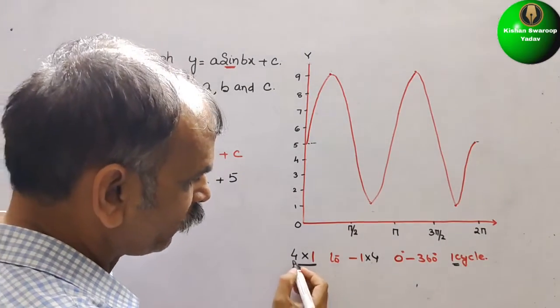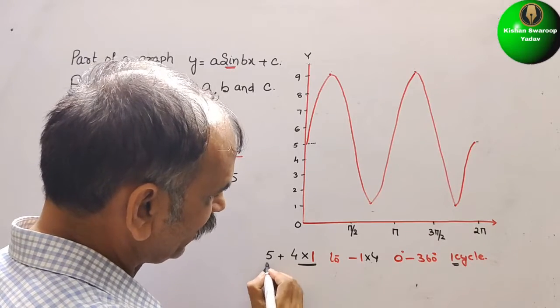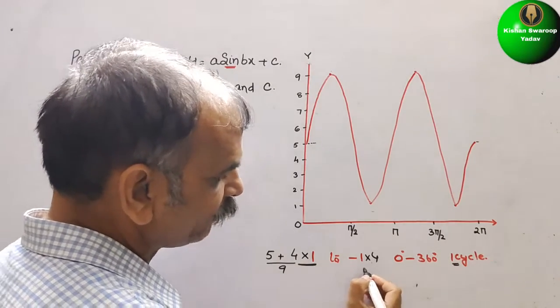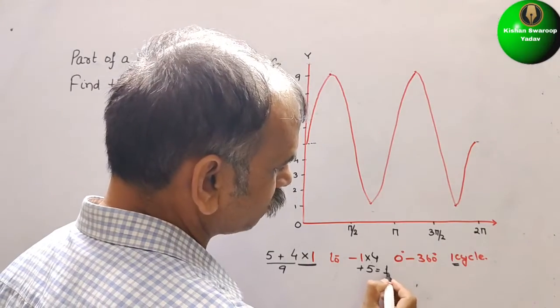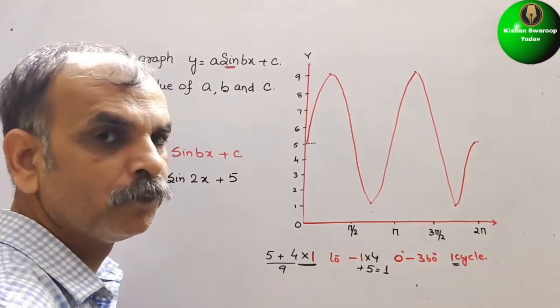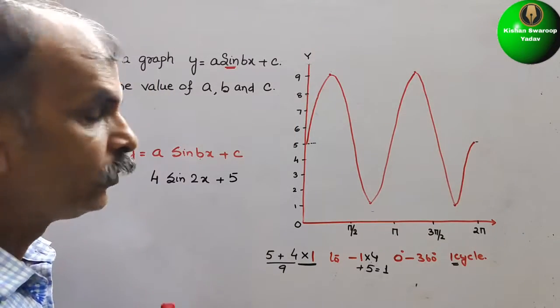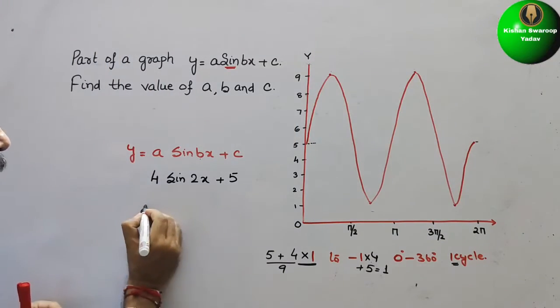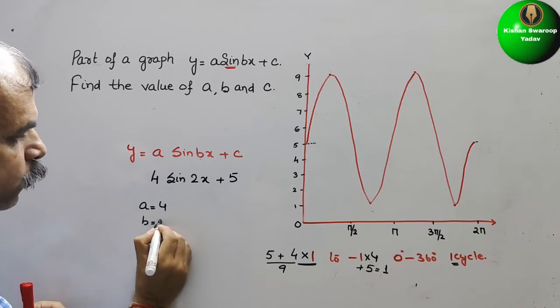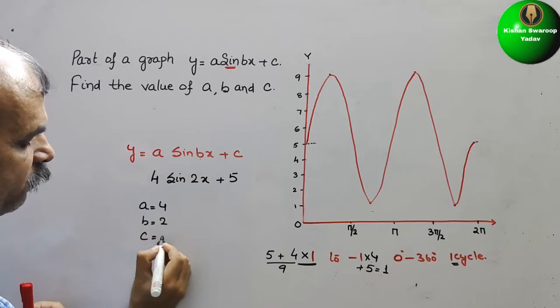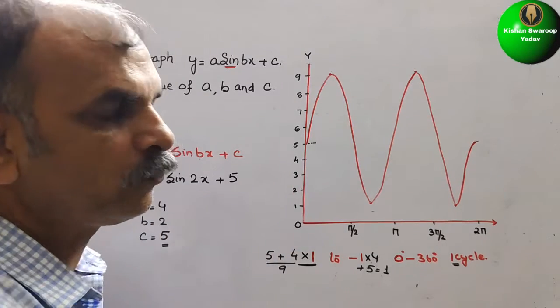Plus 5. So if you add here plus 5. So it will be 9. And here if you add minus 4 plus 5. It will be 1. See this. So like this, we have to find it out the value of this. Now we can say A is 4. B is equal to 2 and C is equal to 5. So like this, we have to find it out.